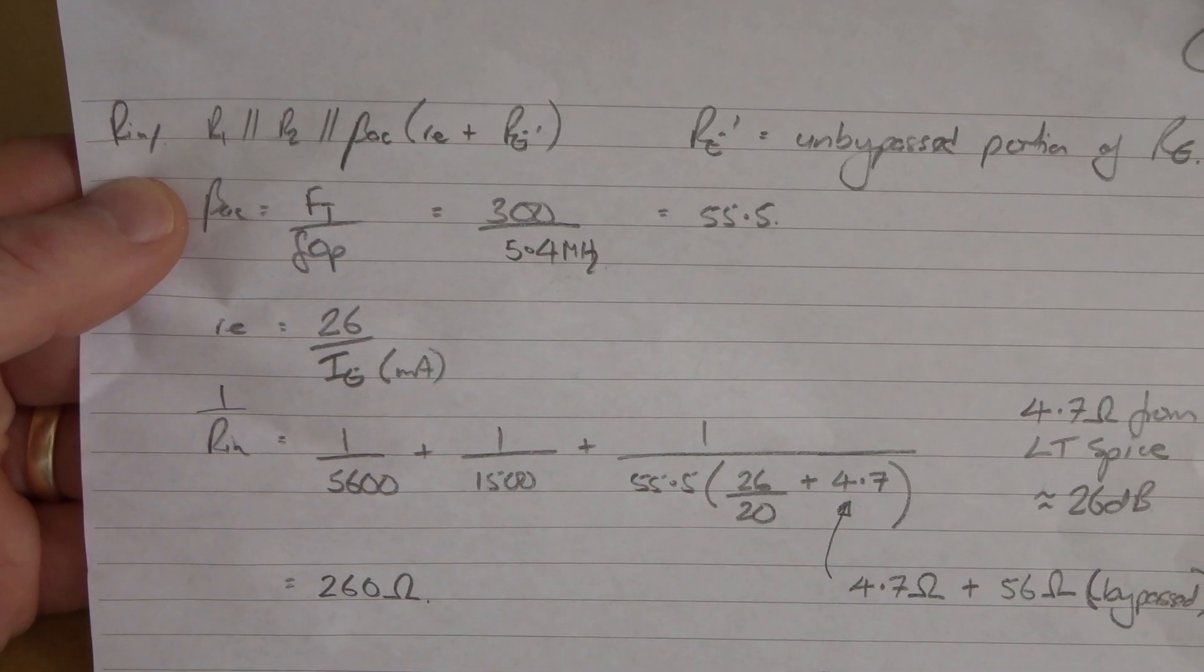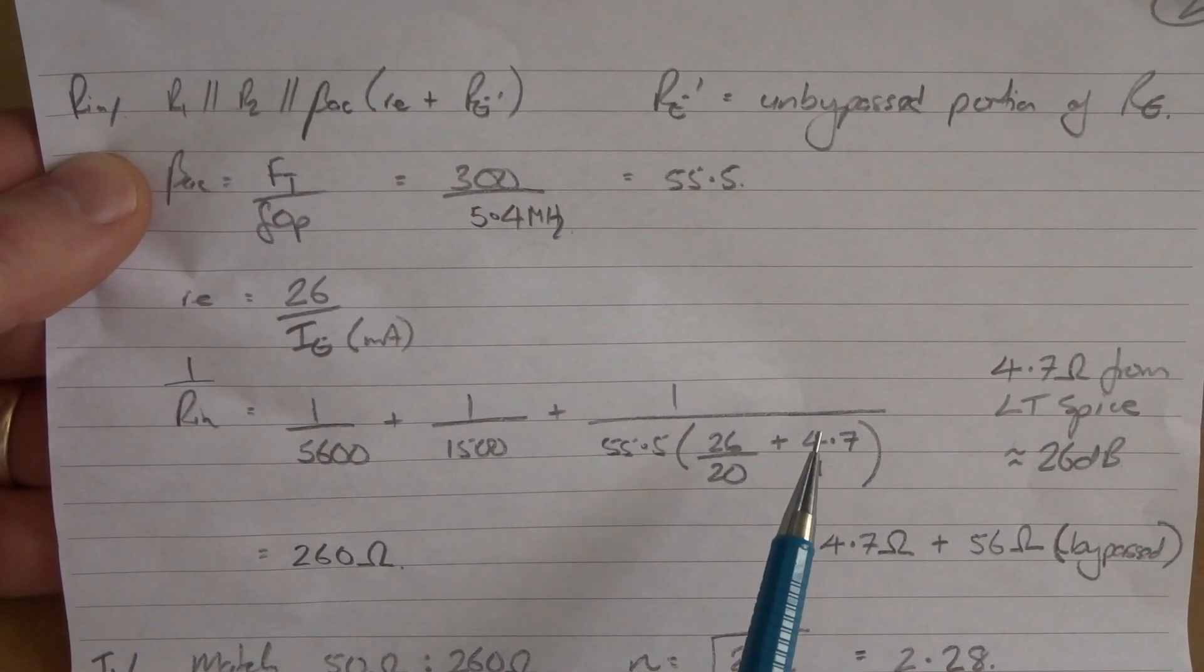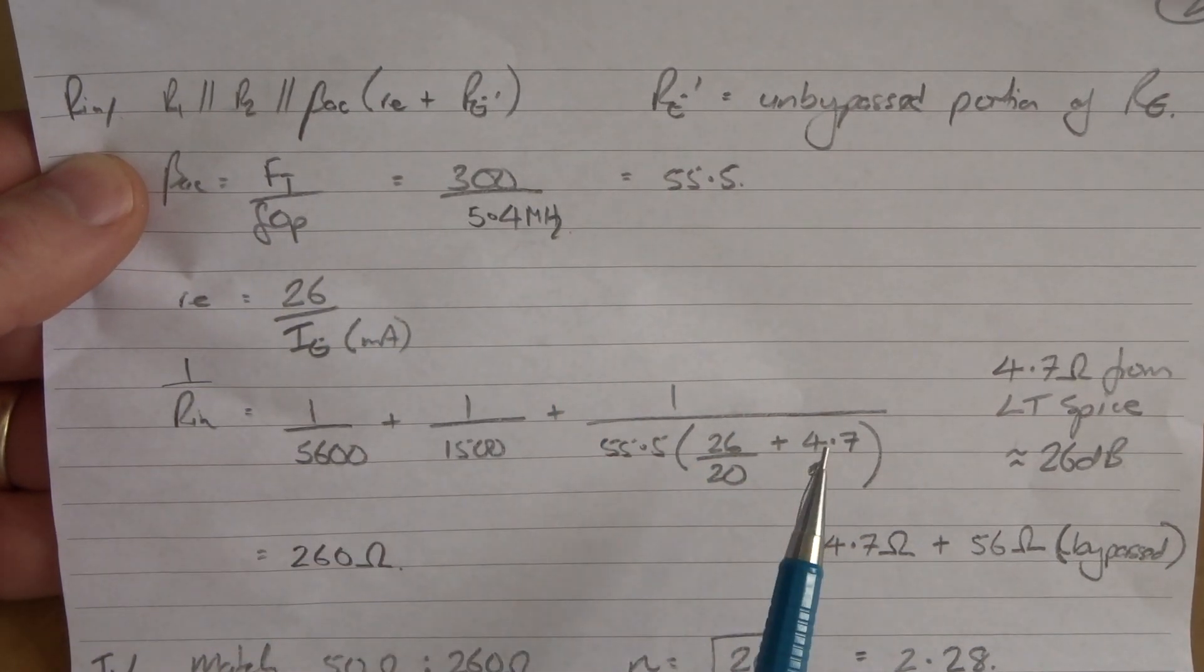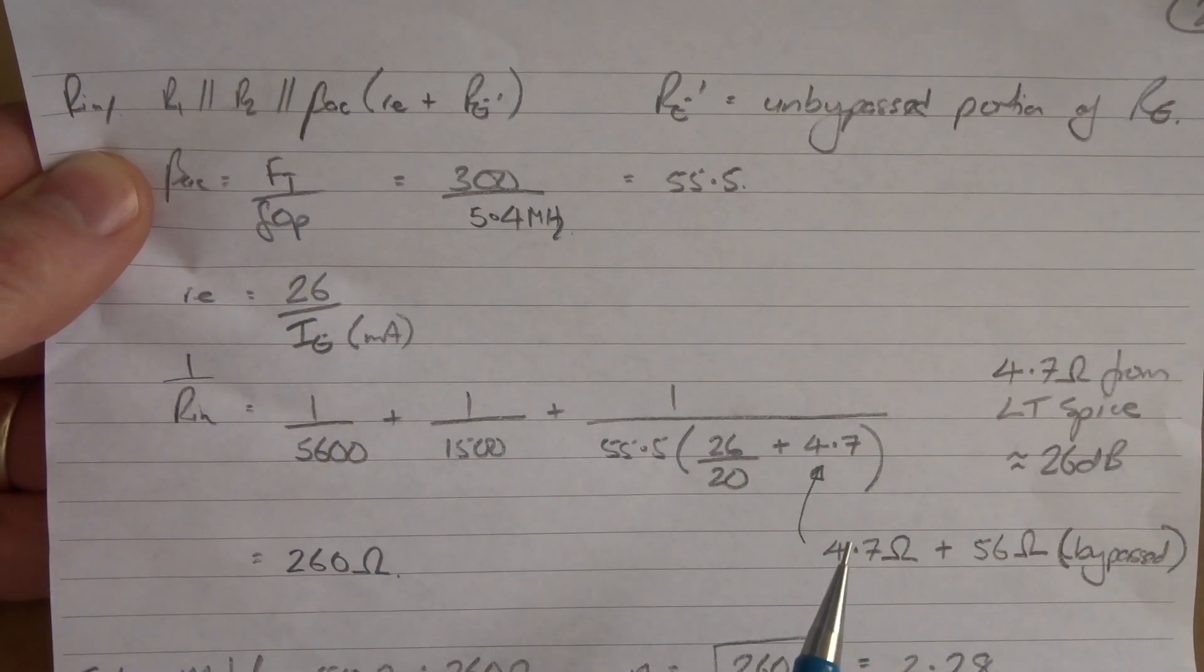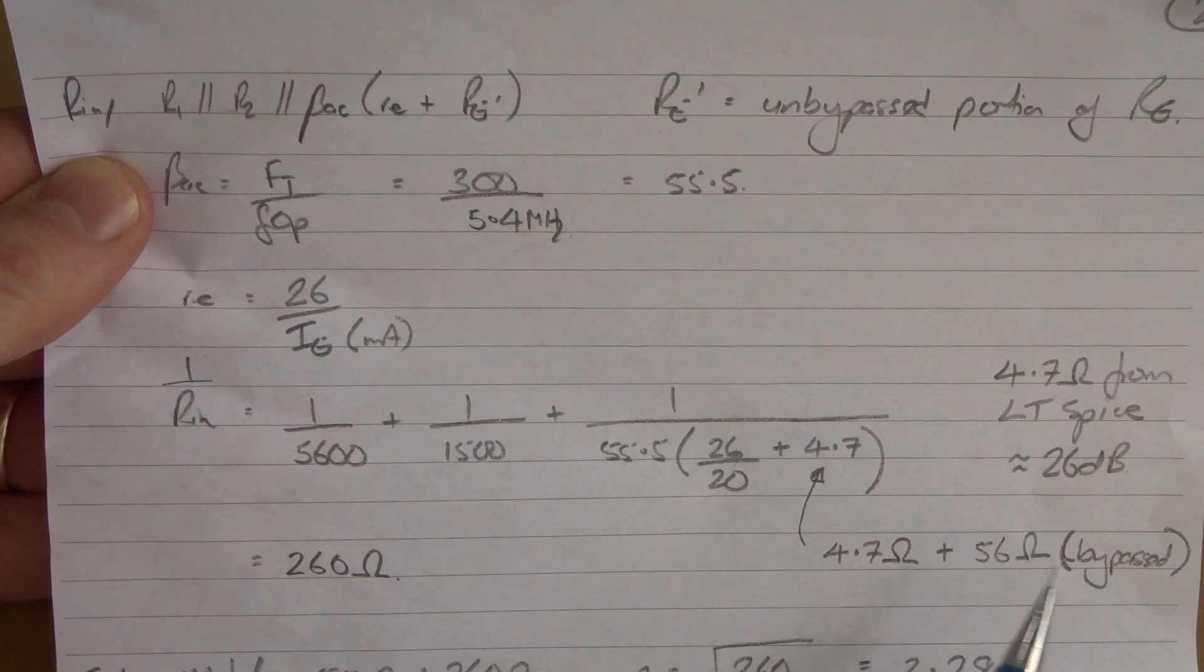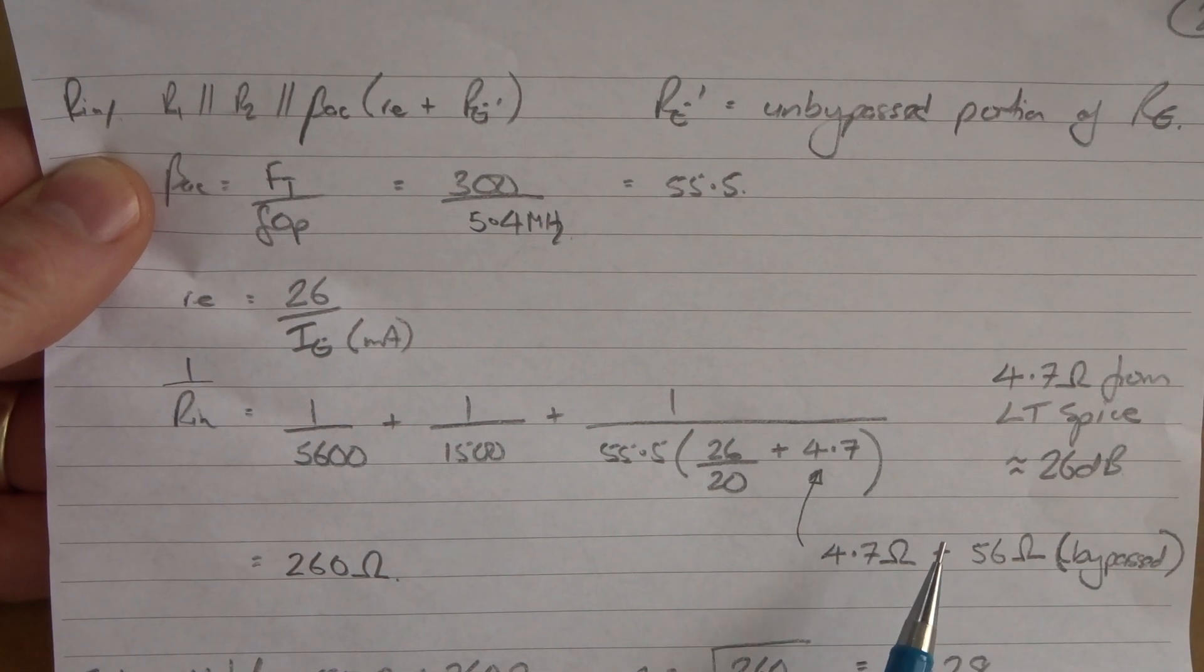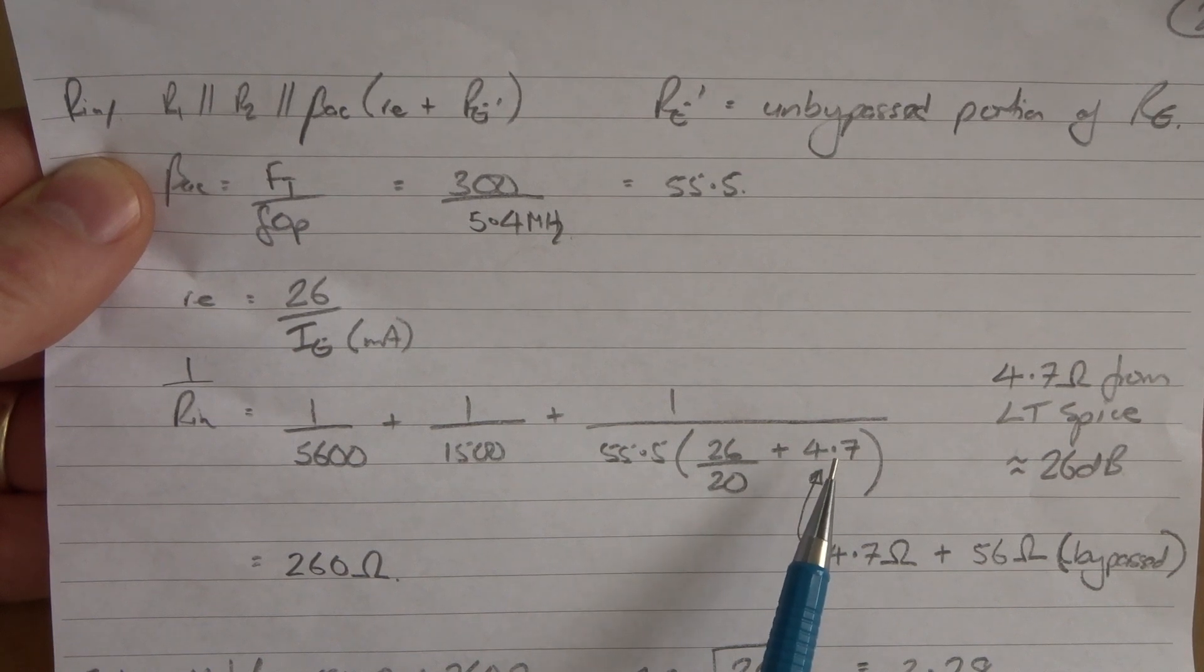So we can plug that in. Before I do, I'll mention that RE dash, this value up here, I used 4.7. I played around with LT Spice and determined that 4.7 in series with a 56 ohm resistor, which is our bypassed portion of RE, is about right. That's what I'm going to use for the unbypassed RE.